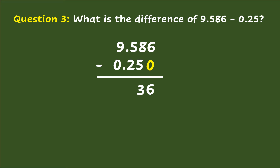Five minus two is three. Nine minus zero is nine. Then bring down the decimal point in the answer. So the final answer is nine and three hundred thirty-six thousandths.